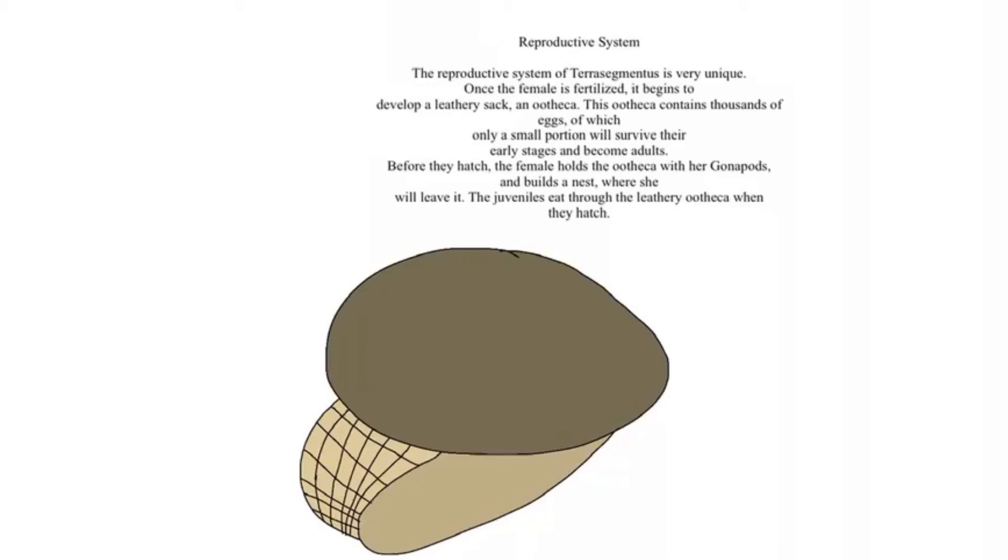The ootheca of the early forms might be laid in small bodies of water like ponds, bogs, and tide pools.